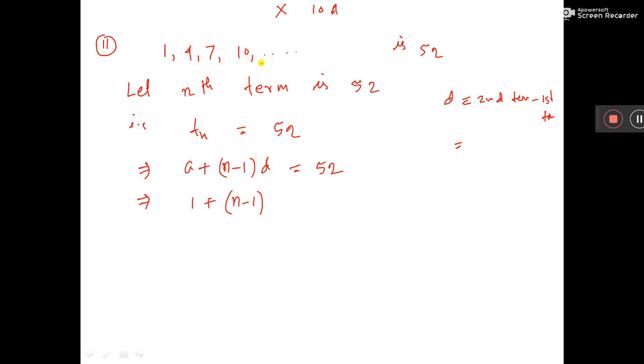What is the value of the second term? It is 4. What is the value of the first term? That is 1. So the value of d is 3. So you put the value here, is equal to 52.